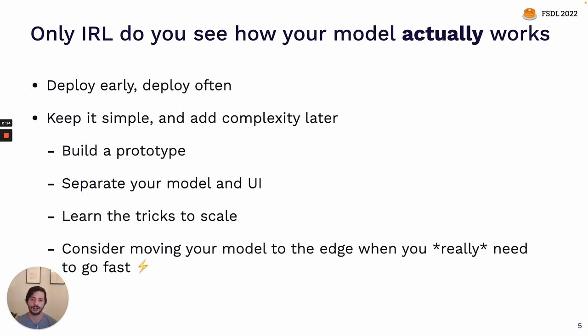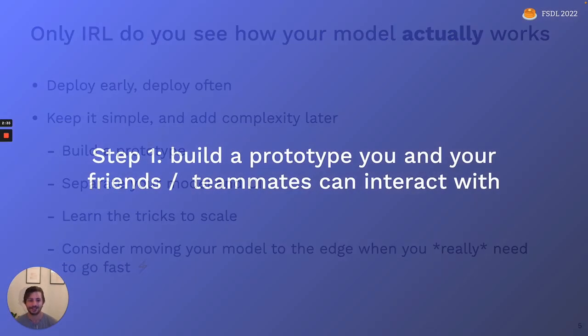We'll walk through the following process, starting with building a prototype. Then we'll talk about how to separate your model and your UI, which is one of the first things you'll need to do to make a more complex UI or to scale. Then we'll talk about tricks to scale your model up to serve many users. And finally, more advanced techniques for when you need your model to be really fast, which often means moving it from a web server to the edge.